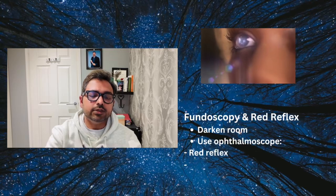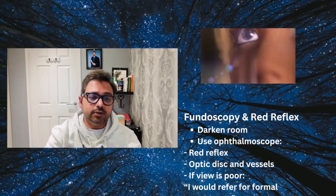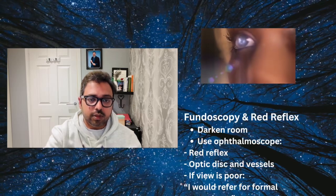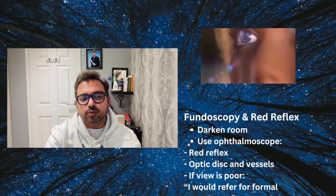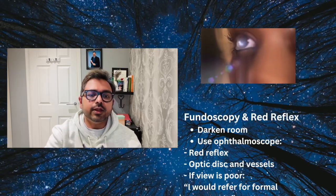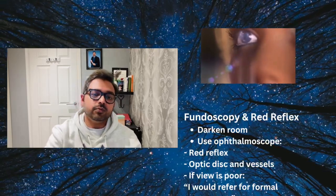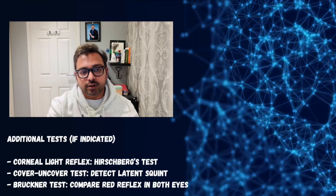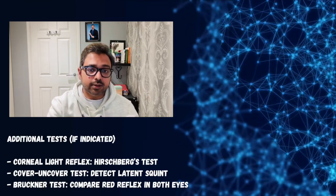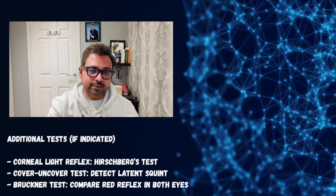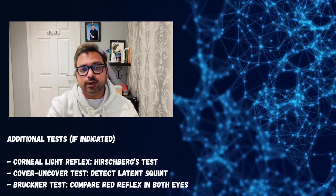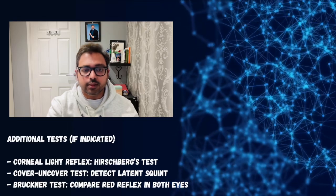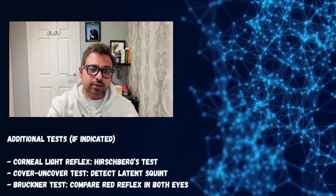Next, perform fundoscopy and check for red reflex — for this you need a dark room. Use the ophthalmoscope, look for the red reflex, then look at the disc and vessels. If the view is poor, refer for a formal assessment. Additional tests if indicated include corneal light reflex (Hirschberg test), the cover-uncover test to detect latent squint, and the Bruckner test to compare the red reflex in both eyes.